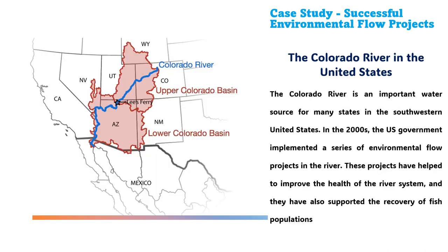A third case study is the Colorado River in the United States. In the 21st century, the U.S. government implemented a series of environmental flow projects that helped to improve the health of the river system and supported the recovery of fish populations. These are just a few examples of successful environmental flow projects. There are many others around the world, including projects on the River Ganges, where the government is extensively working on restoring biodiversity and aquatic life.